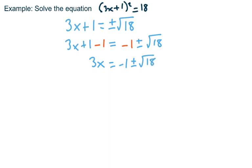And then to solve completely for x, I would need to divide both sides by 3. And that would give me x is equal to negative one plus or minus the principal square root of 18 over 3.